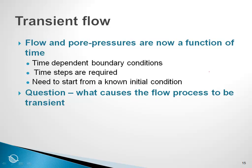In summary, in a transient flow process, flow and pore pressures are a function of real time. We have time-dependent boundary conditions, and consequently we need to define a time-stepping sequence — it is absolutely mandatory — and it is absolutely mandatory to define the known initial conditions. What causes the flow process to be transient boils down to changes in boundary conditions with time and the soil's ability to store or release water, i.e., a change in volumetric water content due to boundary conditions, drainage, or other factors.